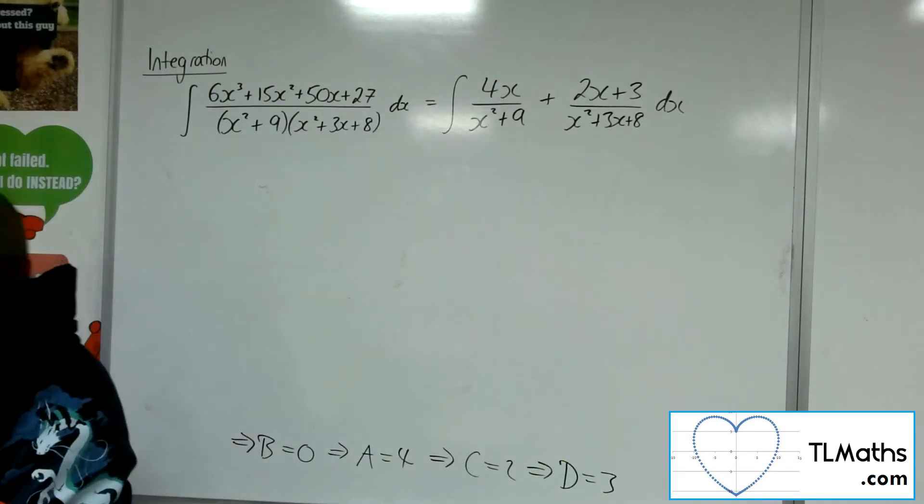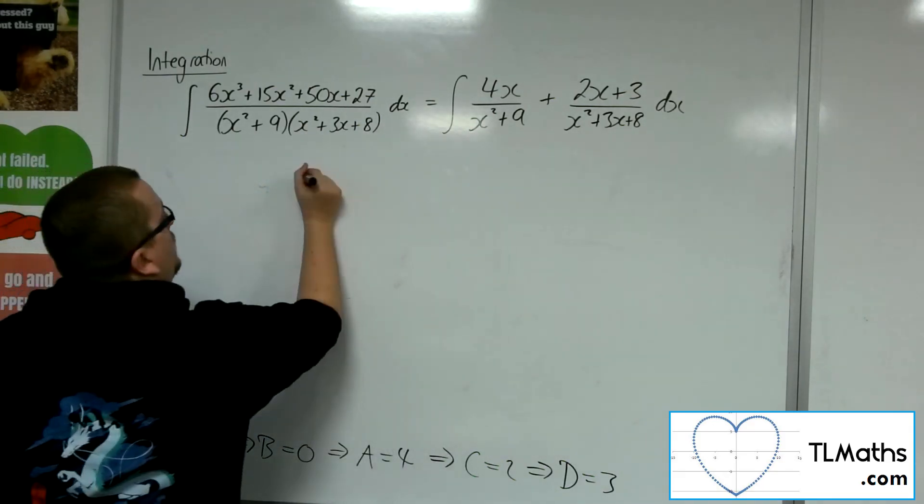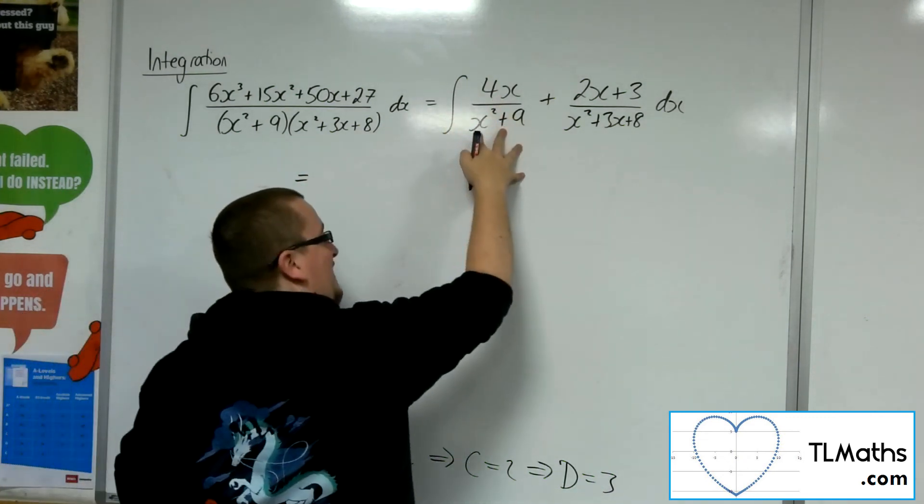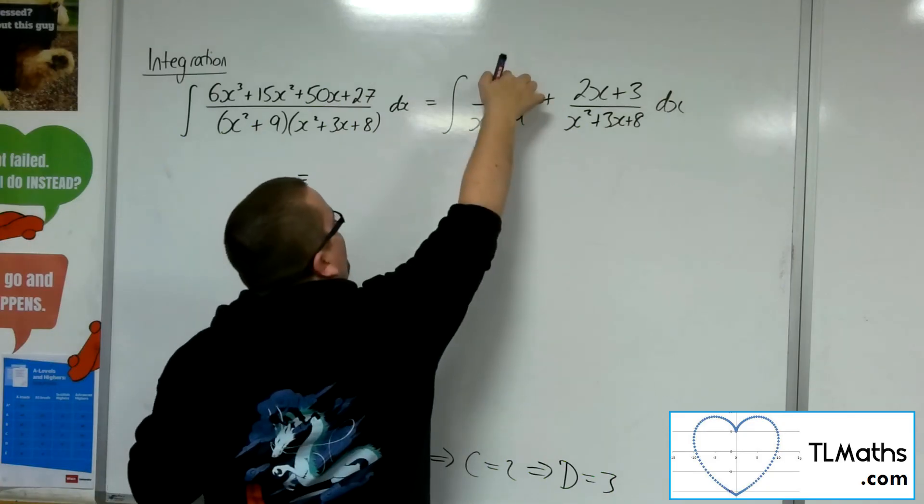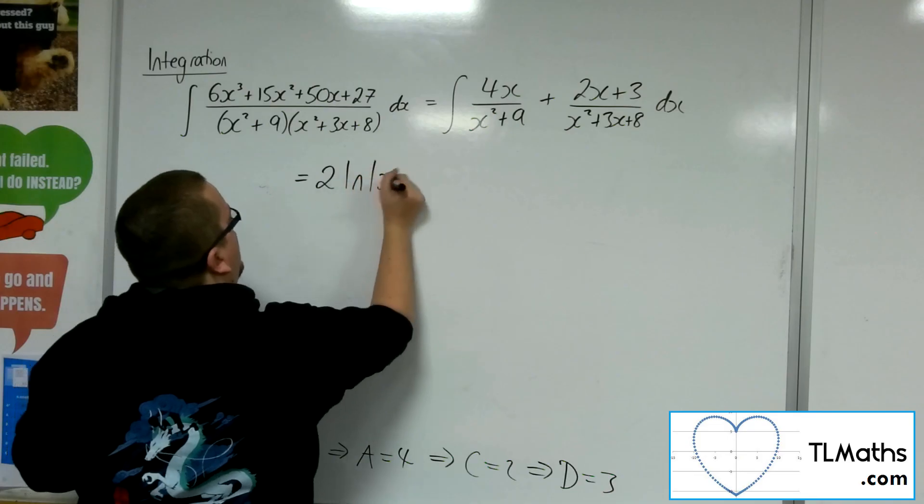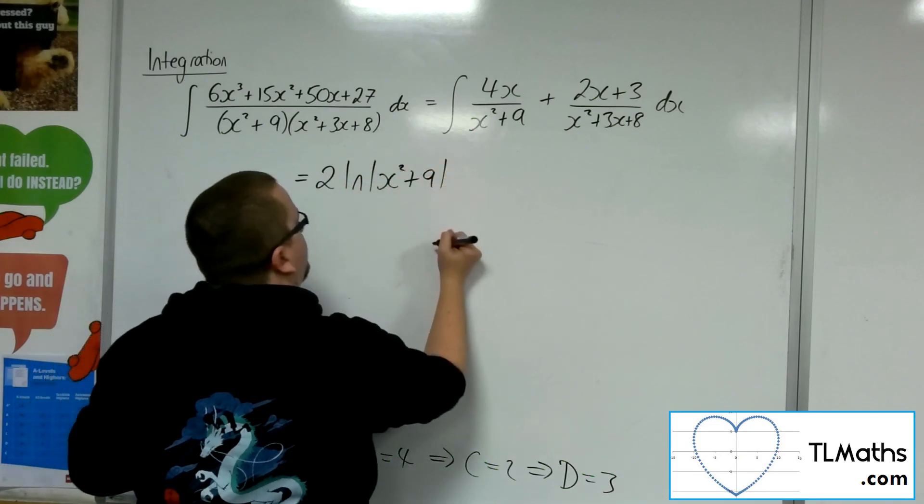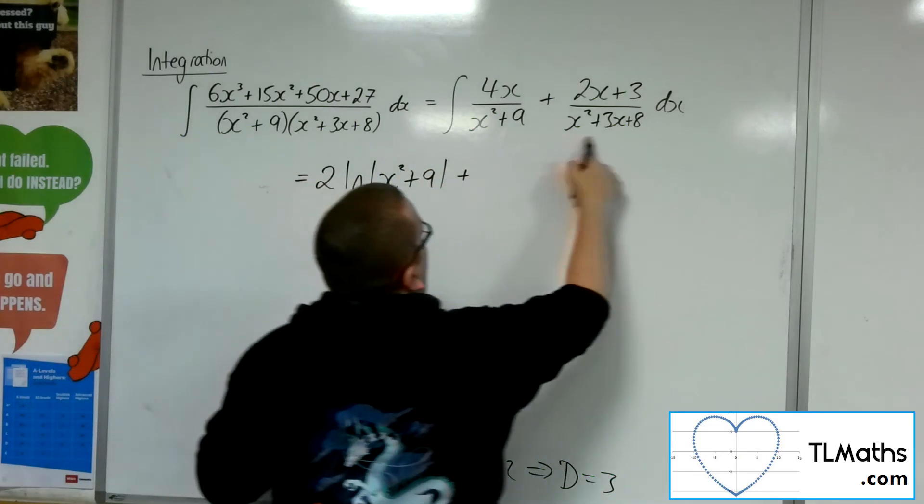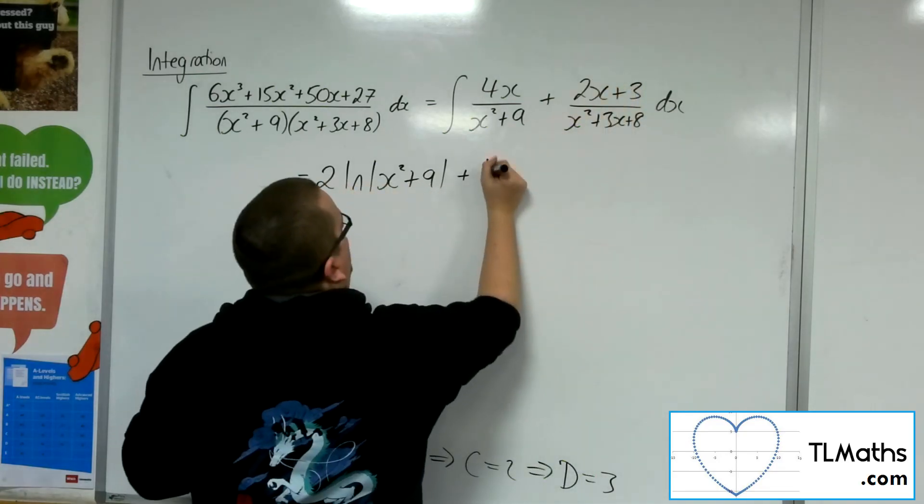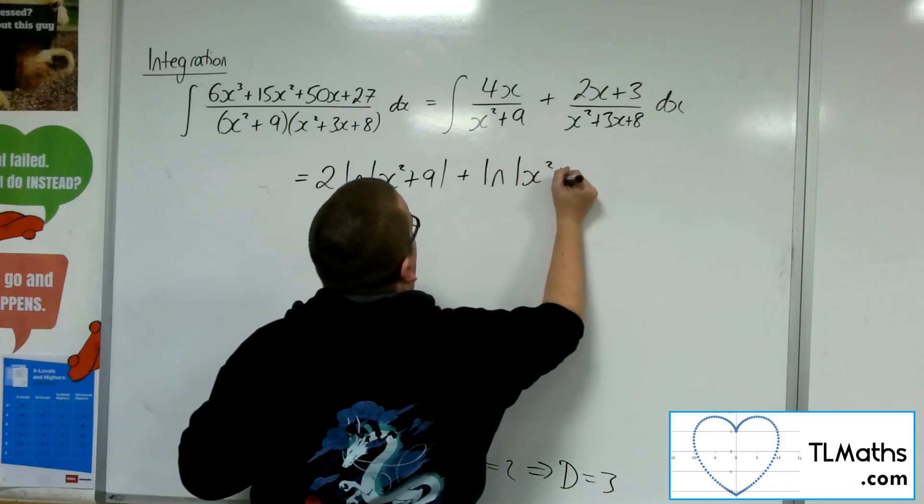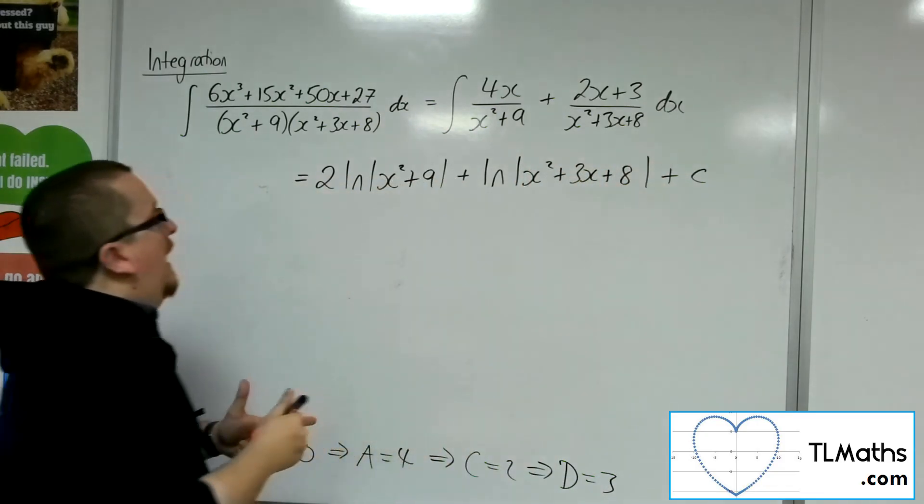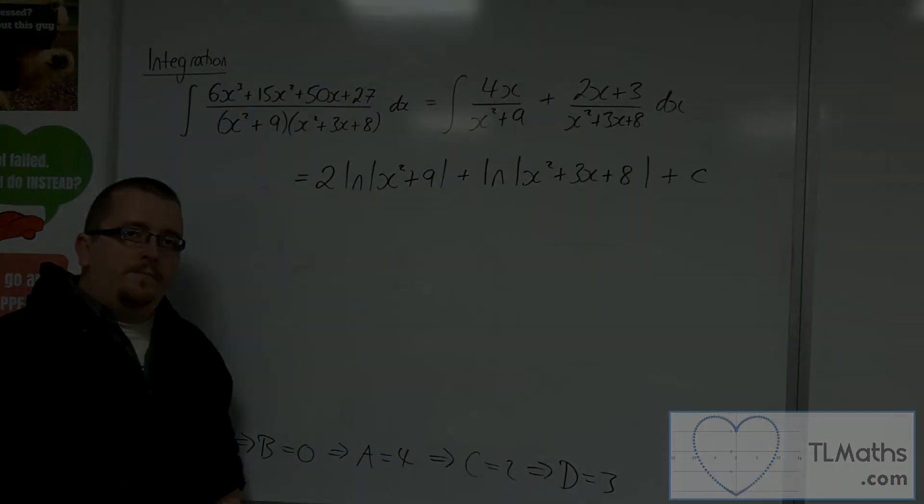And so, integrating, x squared plus 9 differentiates to 2x. We've got 4x, so it's two lots of what I need. So that's 2 log x squared plus 9. The x squared plus 3x plus 8 differentiates to 2x plus 3, which is precisely what we've got. So that's log of x squared plus 3x plus 8 plus c. And that is the answer to the integral that I needed. Thank you.